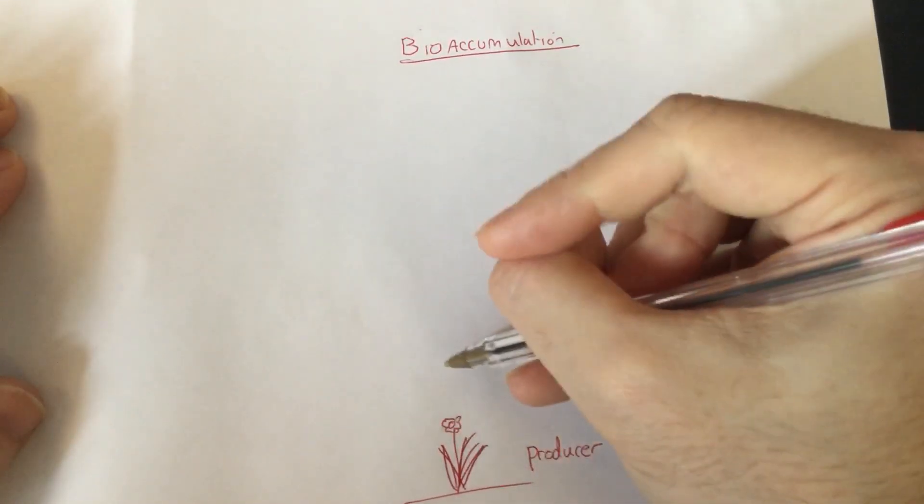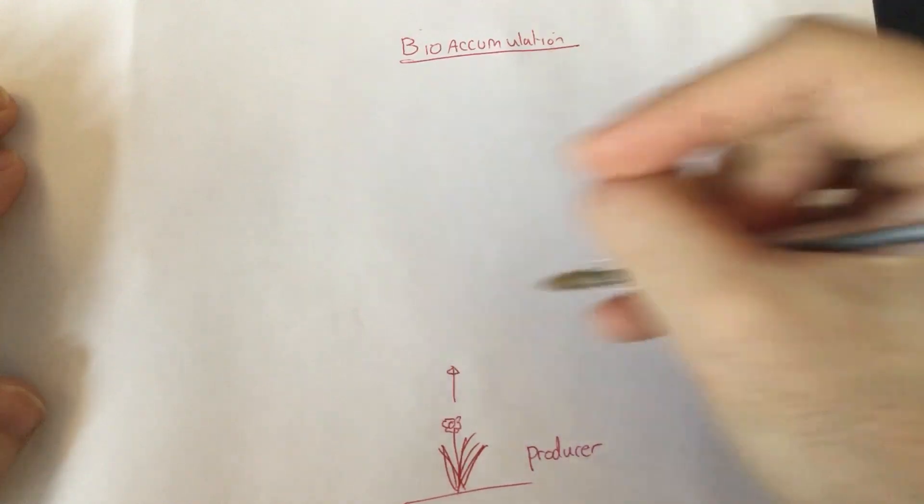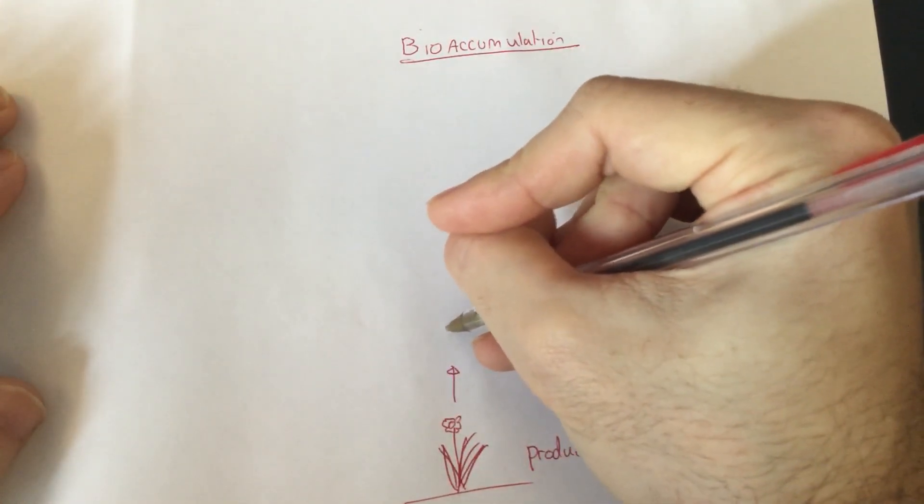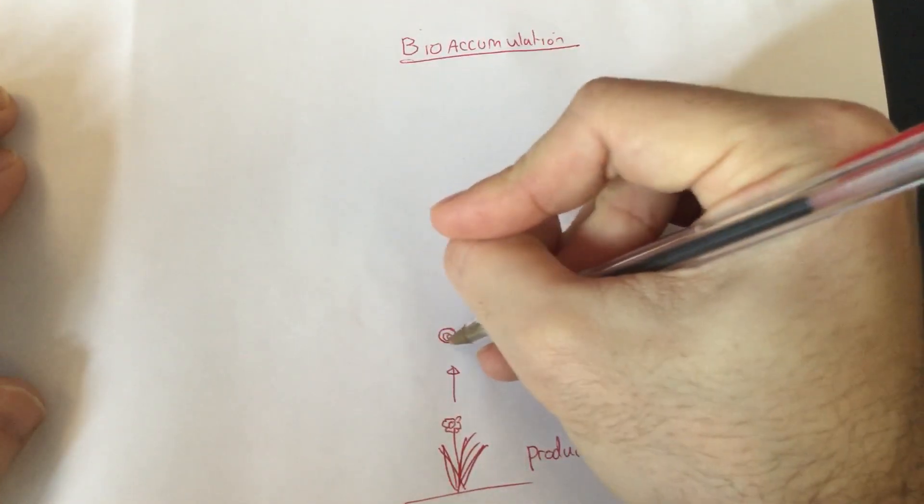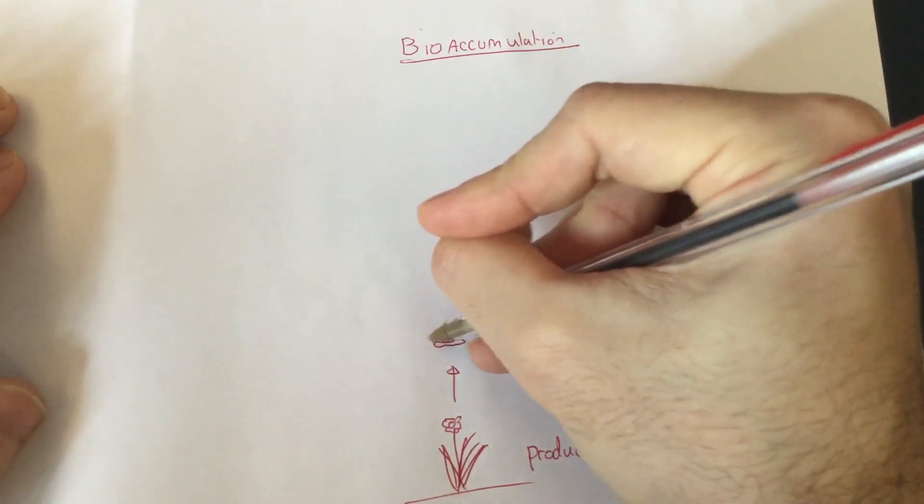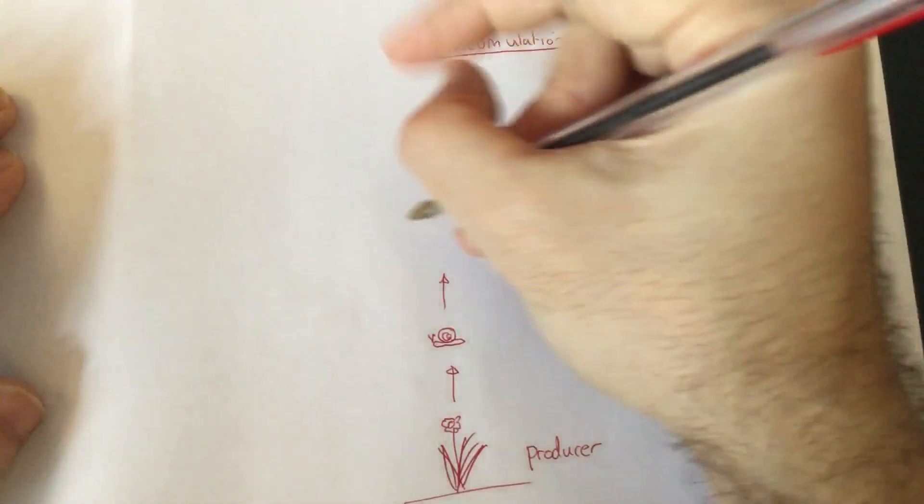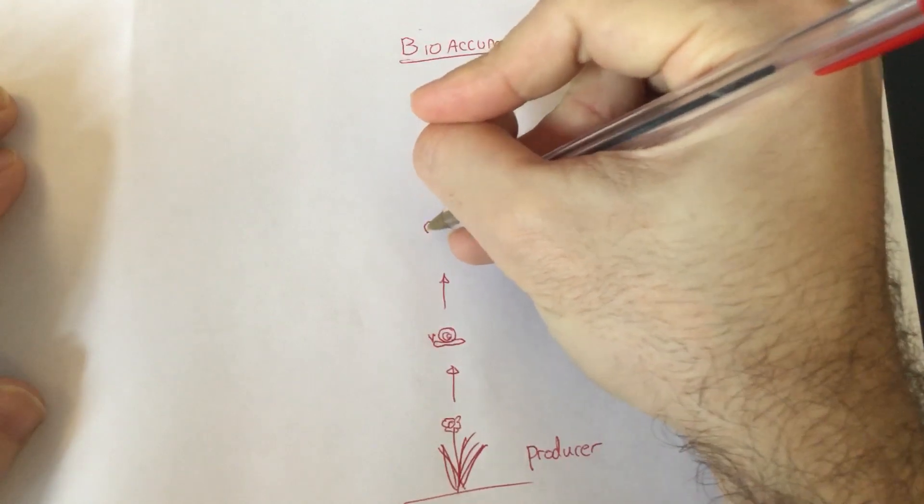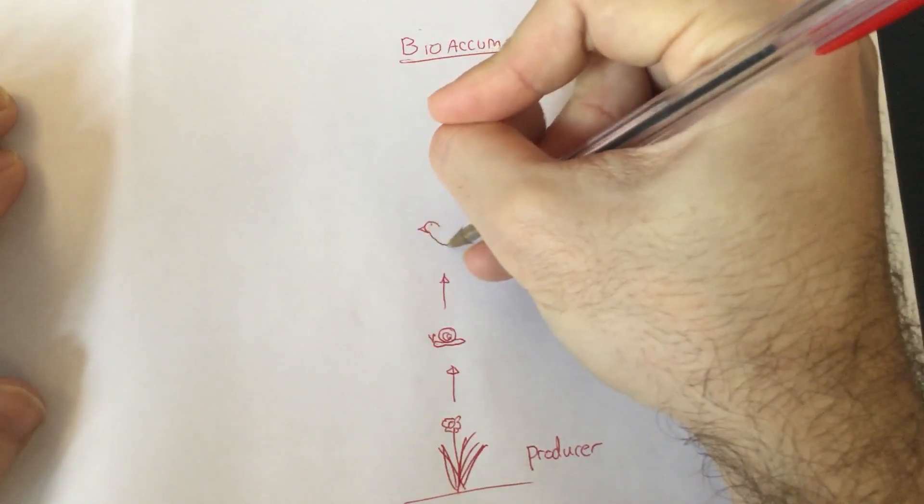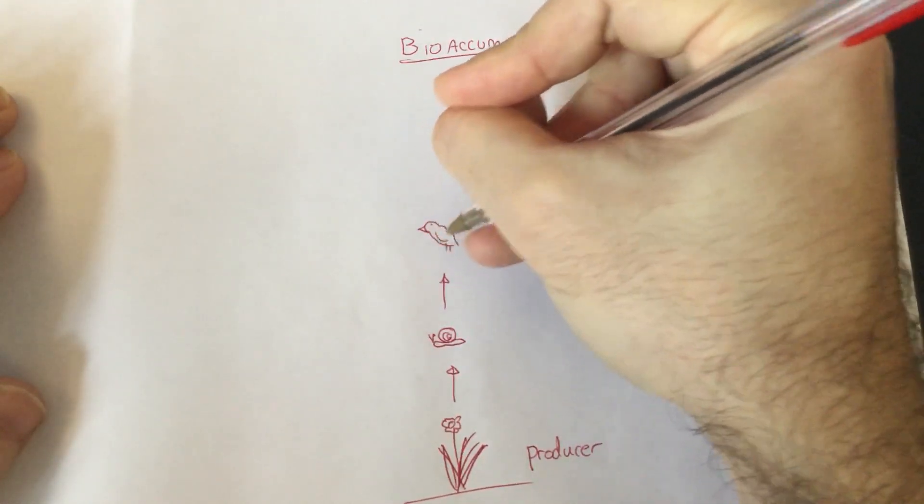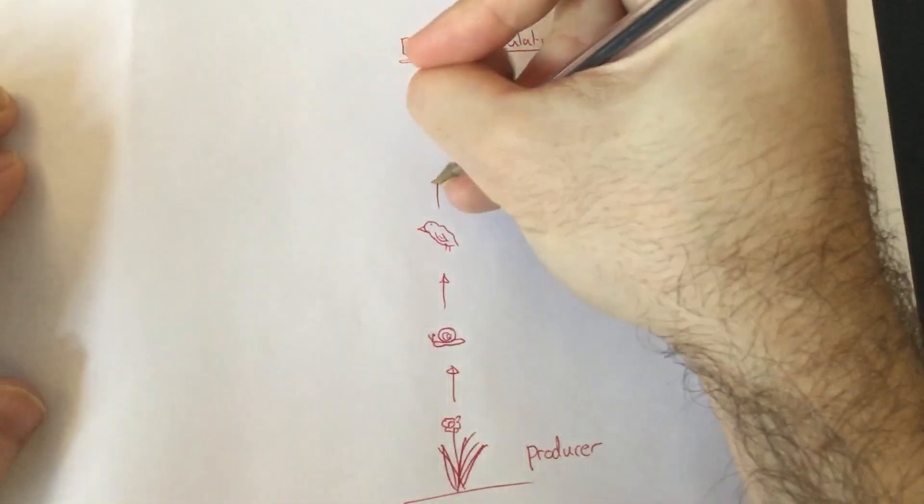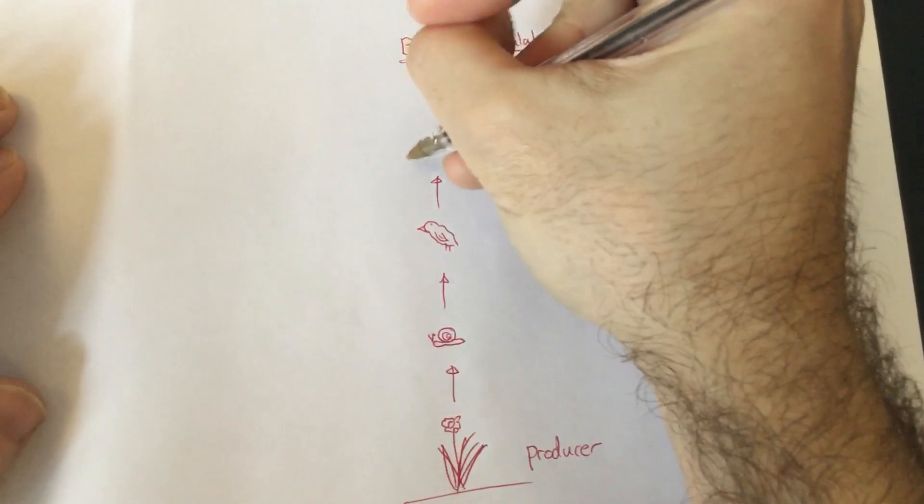Now that is eaten by what we call consumers. And I'm going to draw in a little consumer. There we go. There's my little consumer. It's a snail obviously. And I'm going to draw in the next couple of steps of the food chain as well. So I'm going to draw myself a little bird. And finally I'm going to finish off with let's say a cat.